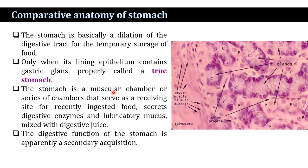The stomach is a muscular chamber, or a series of chambers, found in ruminating animals. It serves as a receiving site for recently ingested foods and secretes digestive enzymes and lubricative mucus mixed with digestive juice. The digestive function of the stomach is apparently a secondary acquisition.